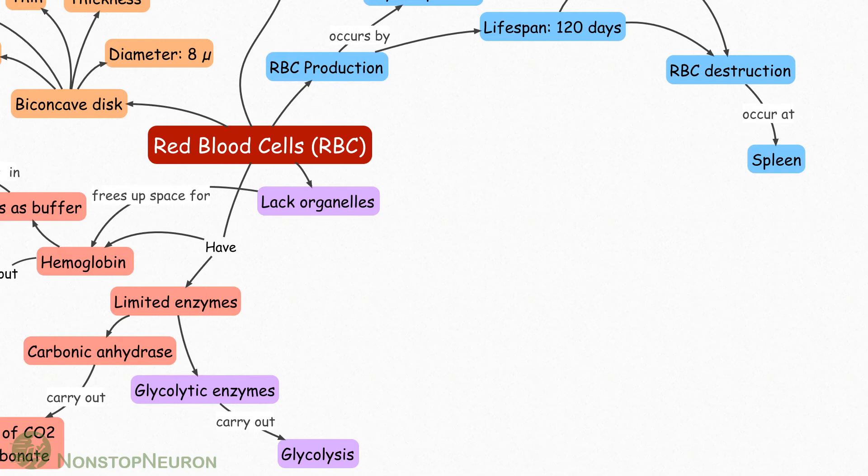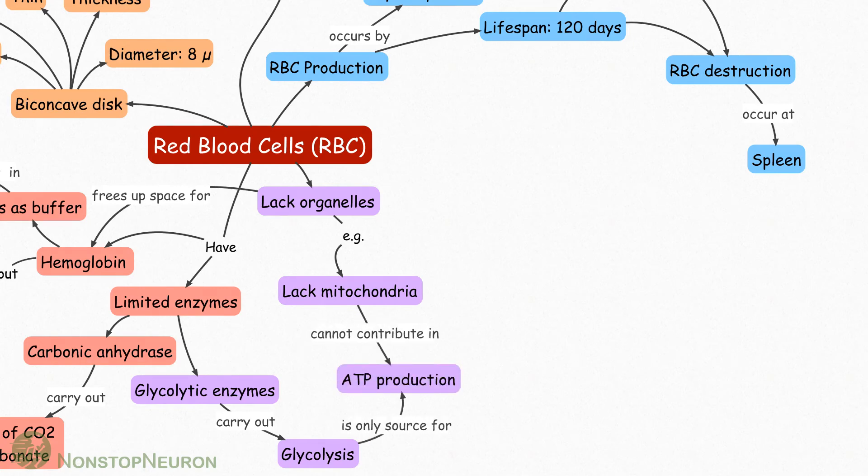However, this advantage comes with some disadvantages. For example, lack of mitochondria means no contribution of mitochondria in ATP production. So, glycolysis is the only source of ATP in RBC.